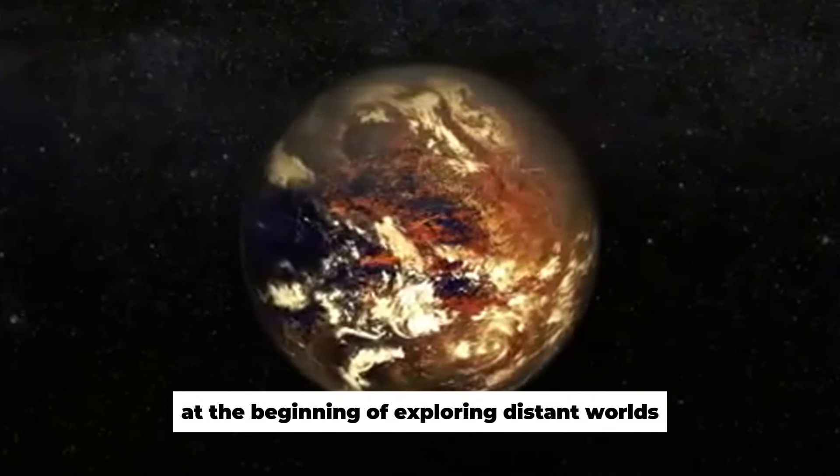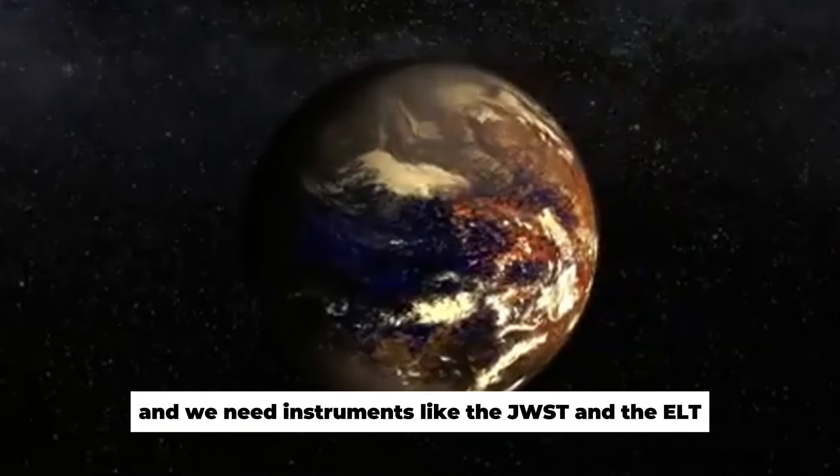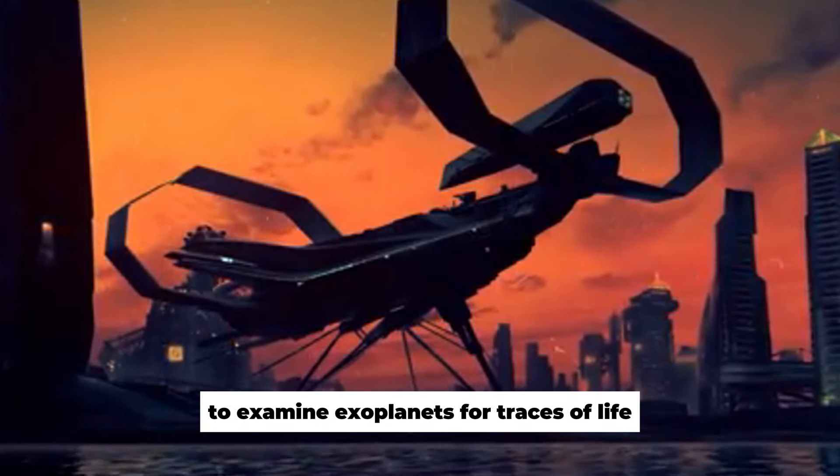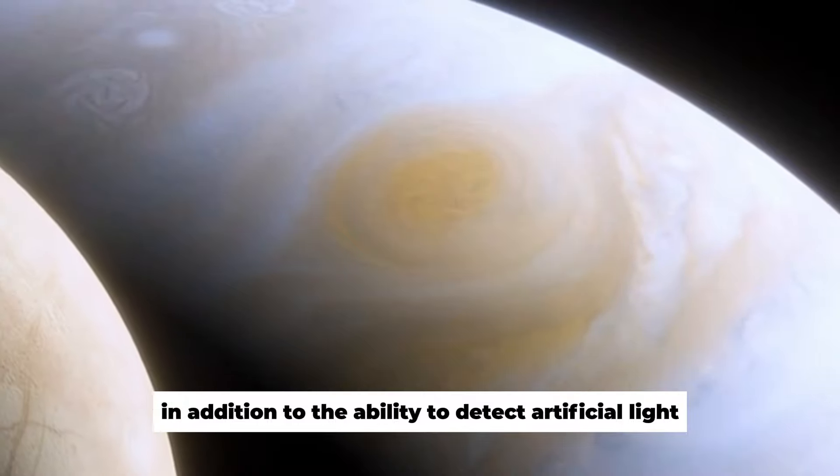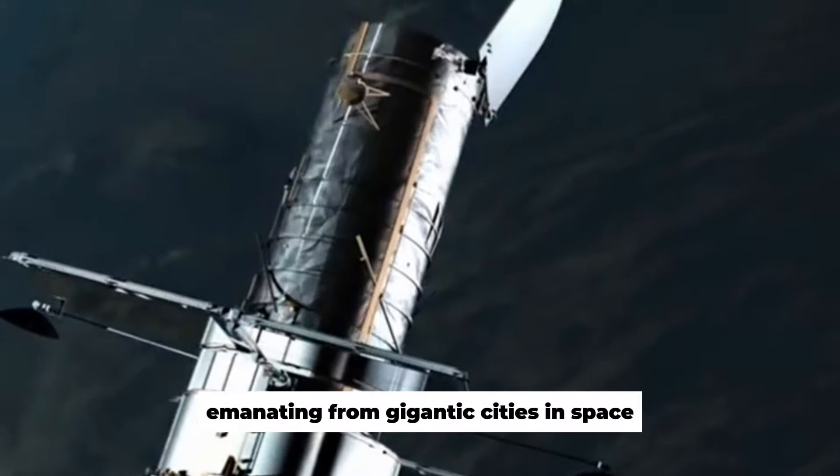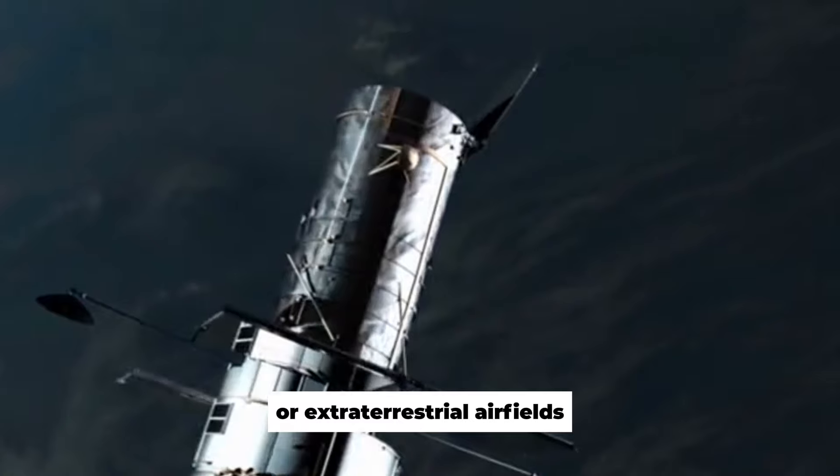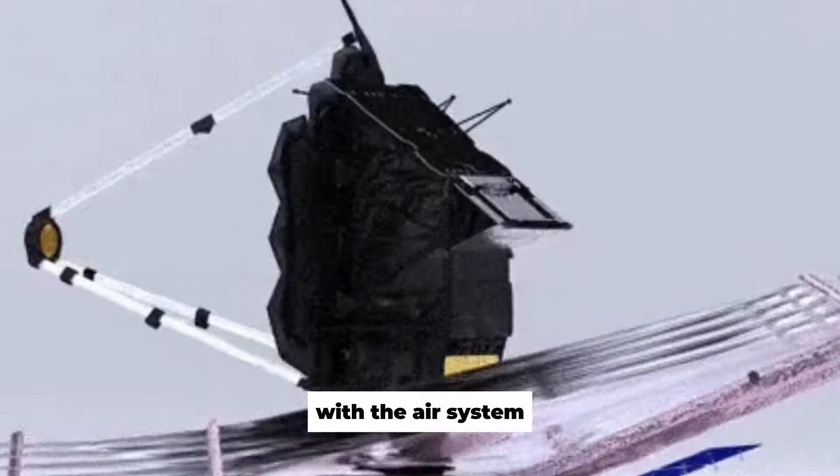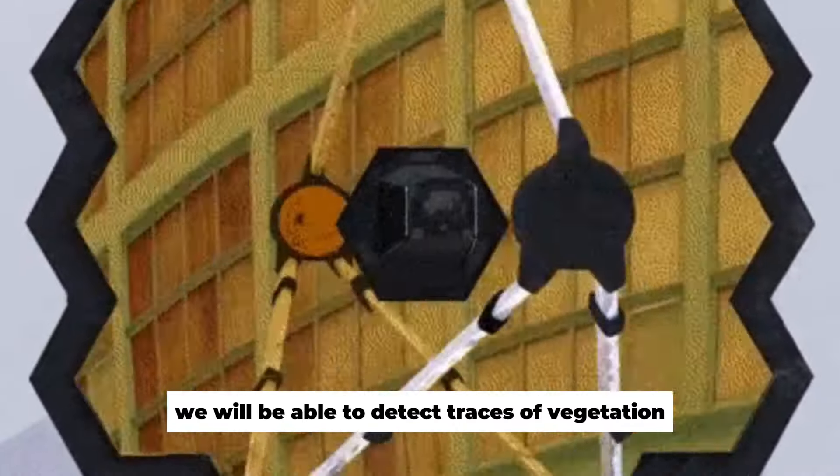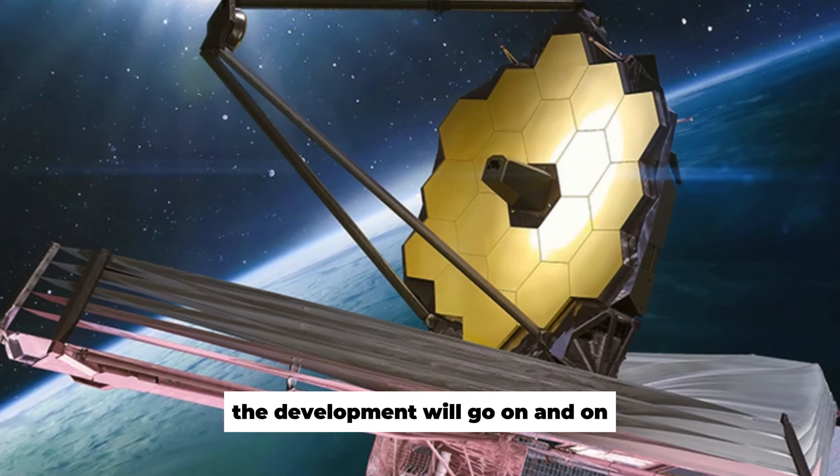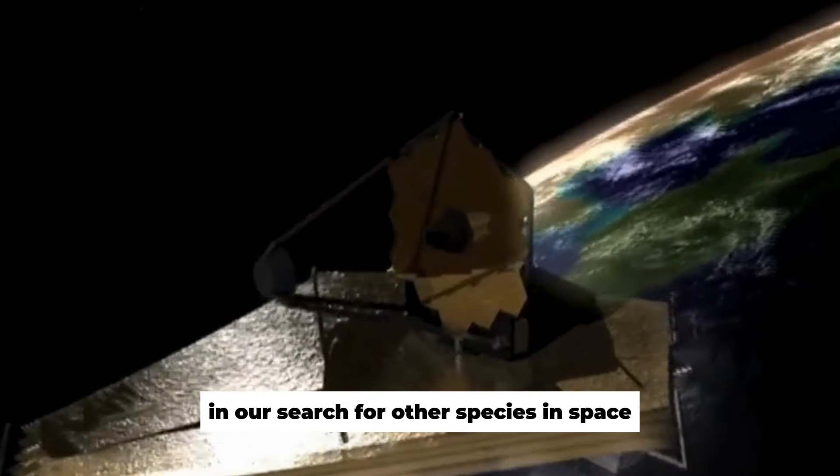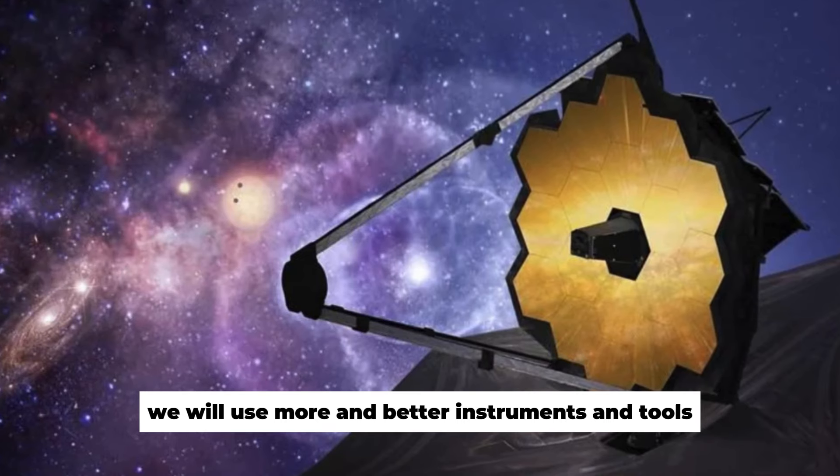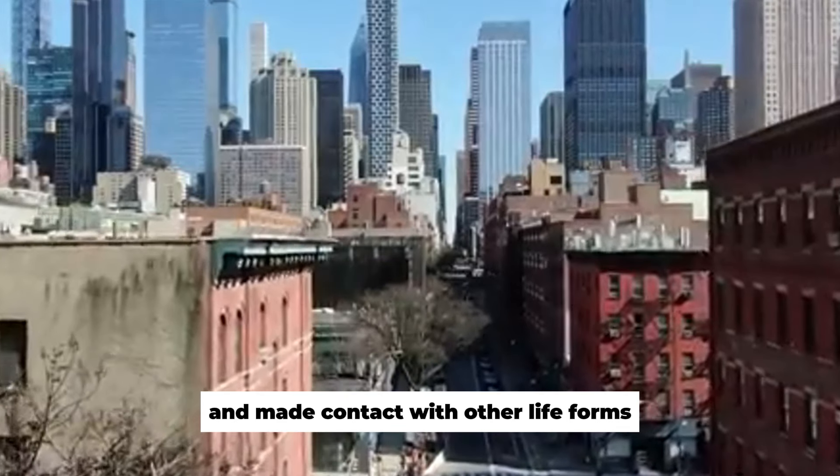We are only at the beginning of exploring distant worlds, and we need instruments like the JWST and the ELT to examine exoplanets for traces of life. In addition to the ability to detect artificial light emanating from gigantic cities in space, or extraterrestrial airfields, we will soon be using a new secret weapon with the AIR system. We will be able to detect traces of vegetation on distant planets. The development will go on and on in our search for other species in space. We will use more and better instruments and tools until we have found and made contact with other life forms.